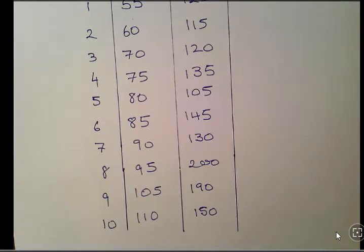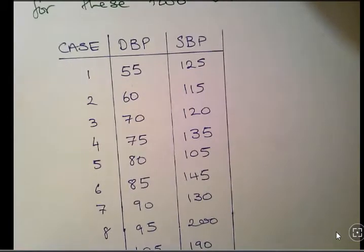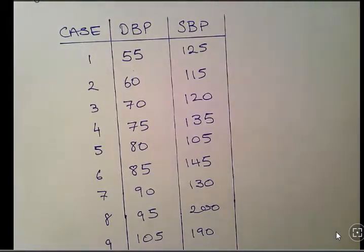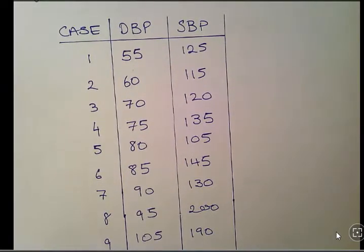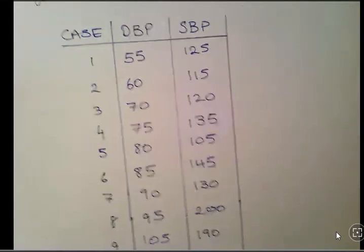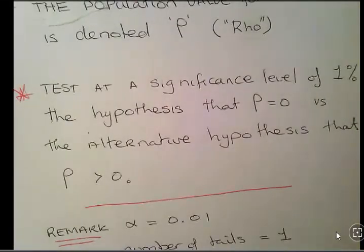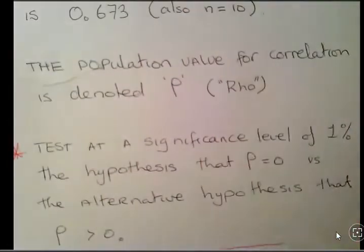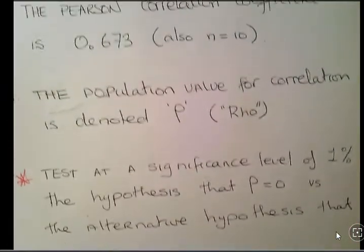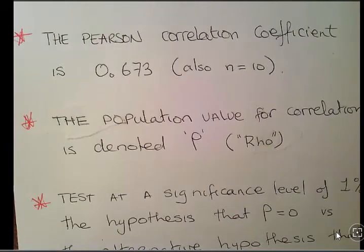So diastolic blood pressure and systolic blood pressure with 10 cases. What I'm going to do first is formally set out the question. I'm giving you this piece of information: the Pearson correlation coefficient is 0.673, and there are 10 cases.